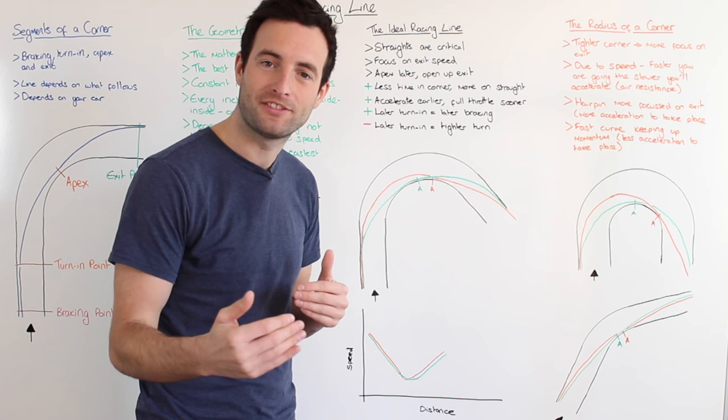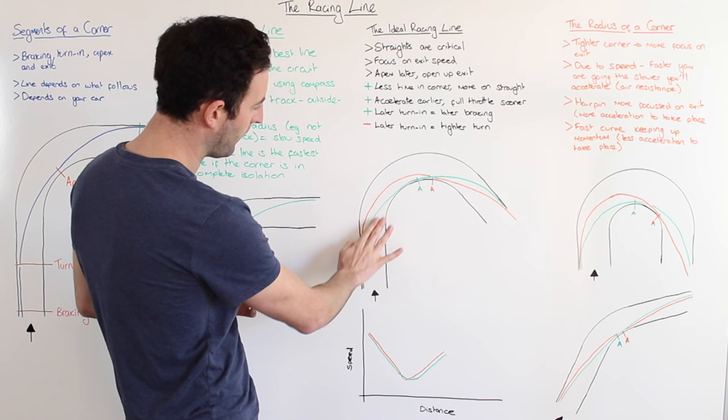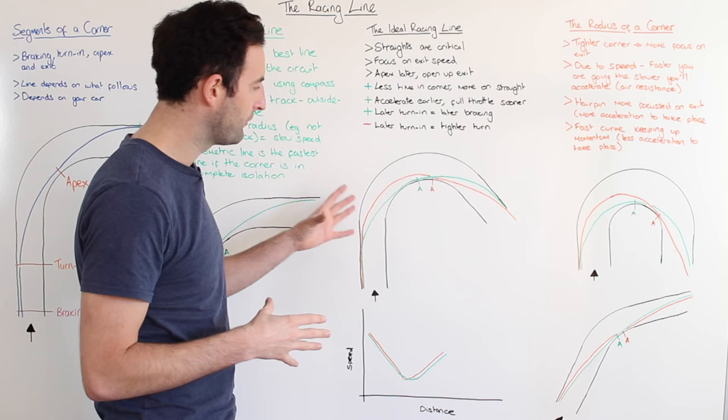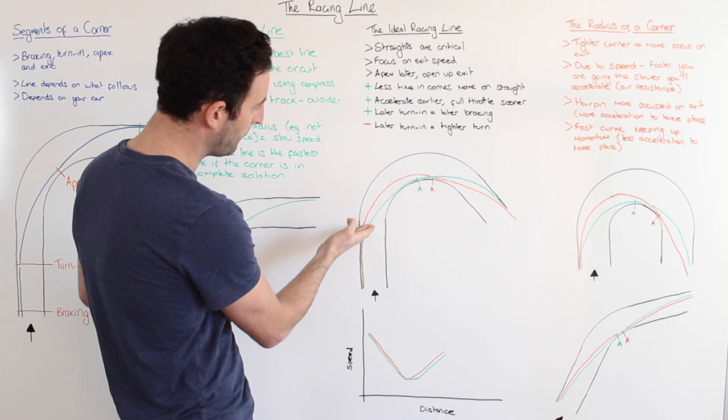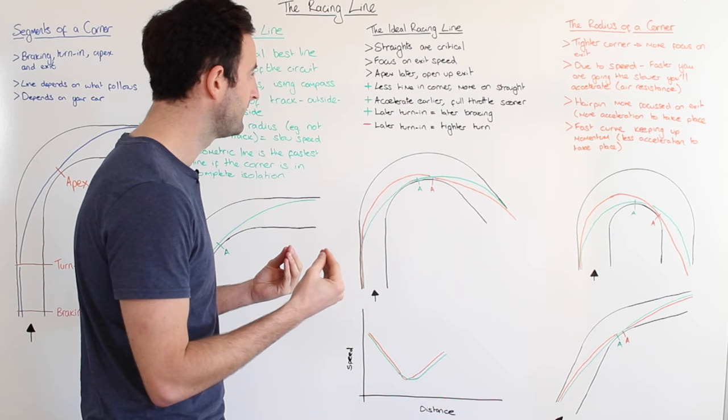So really we need to change our line to focus on the exit of the corner rather than the entry we saw on the geometric line. The geometric line comes in quite early, reaches the apex in the middle of the corner, and then pushes out using all the road on the exit — it's the smoothest curve through the corner. However if you take a look at the orange line, you can see that we come in a little bit wider, the turning point is a little bit later, and we try to open up the exit so that we can get out of the corner as fast as possible.